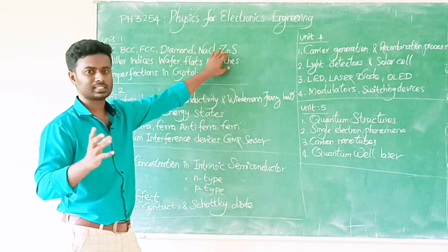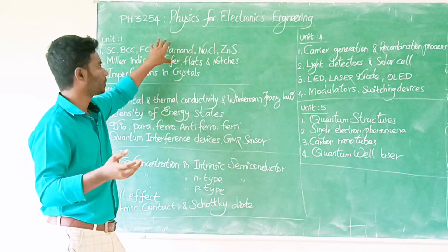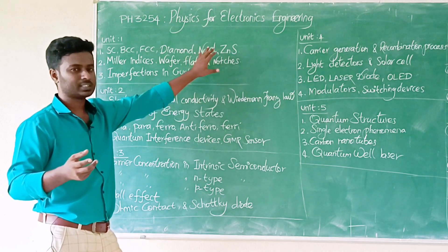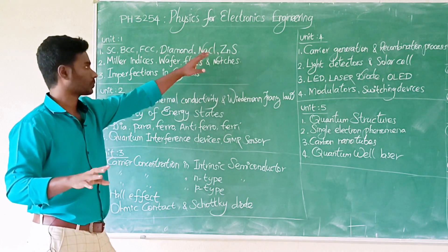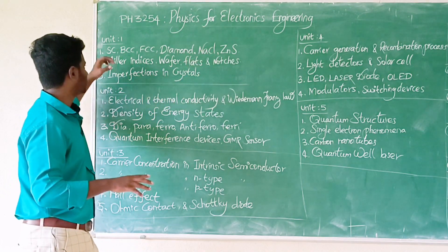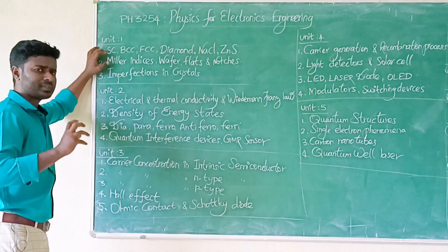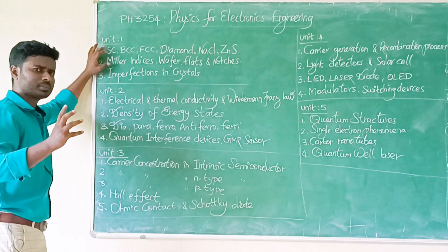ZnS and Diamond cubic structure — you can place atoms at corners. Next topic is Miller indices.